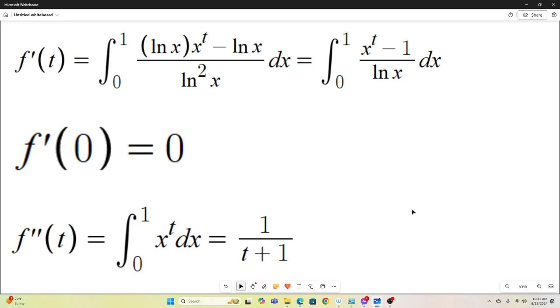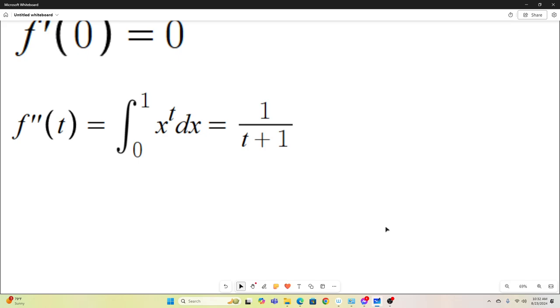Let's take another derivative with respect to t. So we have f prime of t represented by this integral. Let's use the Leibniz rule for differentiation under the integral sign one more time. Again, all we have to do is take the partial with respect to the parameter, in this case t, and leave the rest alone. So we have f double prime of t is equal to the integral from 0 to 1 of x to the t dx, and that's easy to evaluate. That's just the anti-derivative evaluated at the bounds. So we'd have x to the t plus 1 over t plus 1 evaluated from 0 to 1, and that will just give us 1 over t plus 1. So we have f double prime of t.